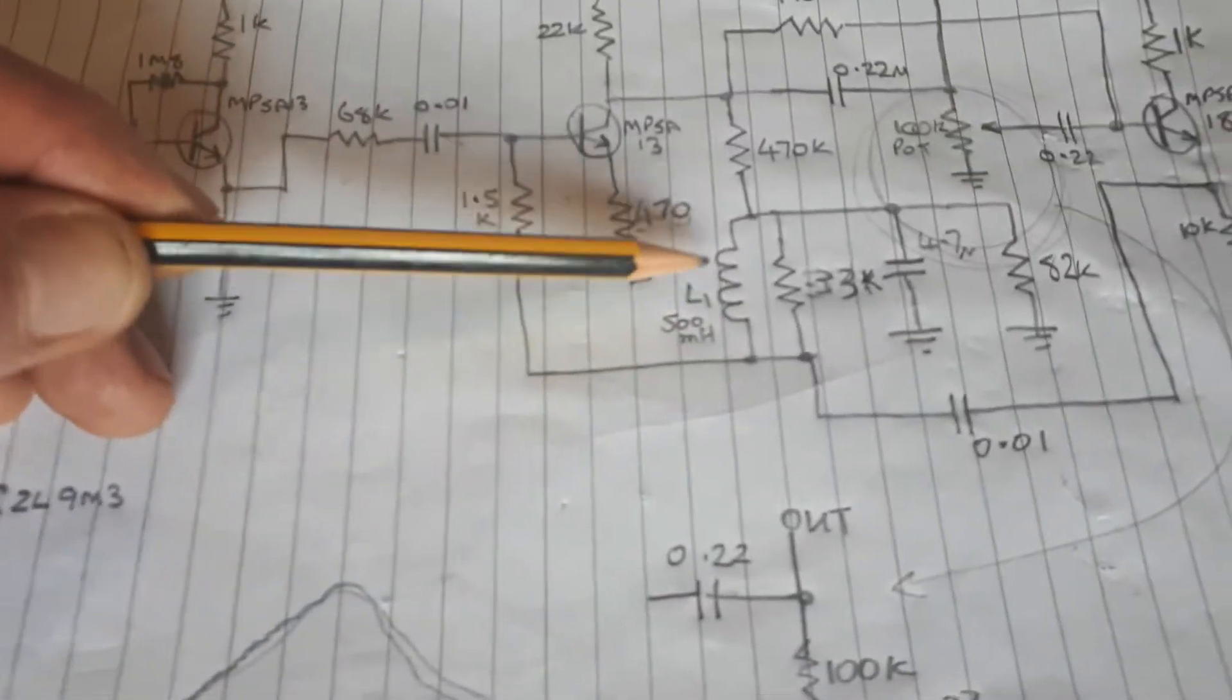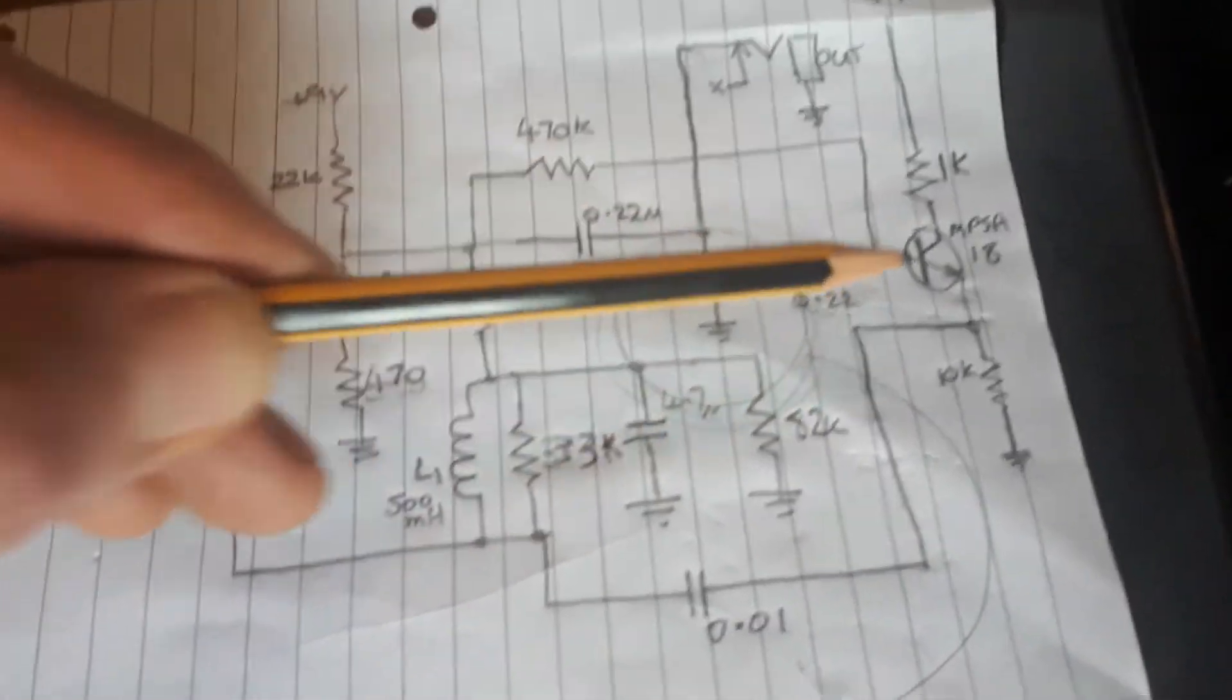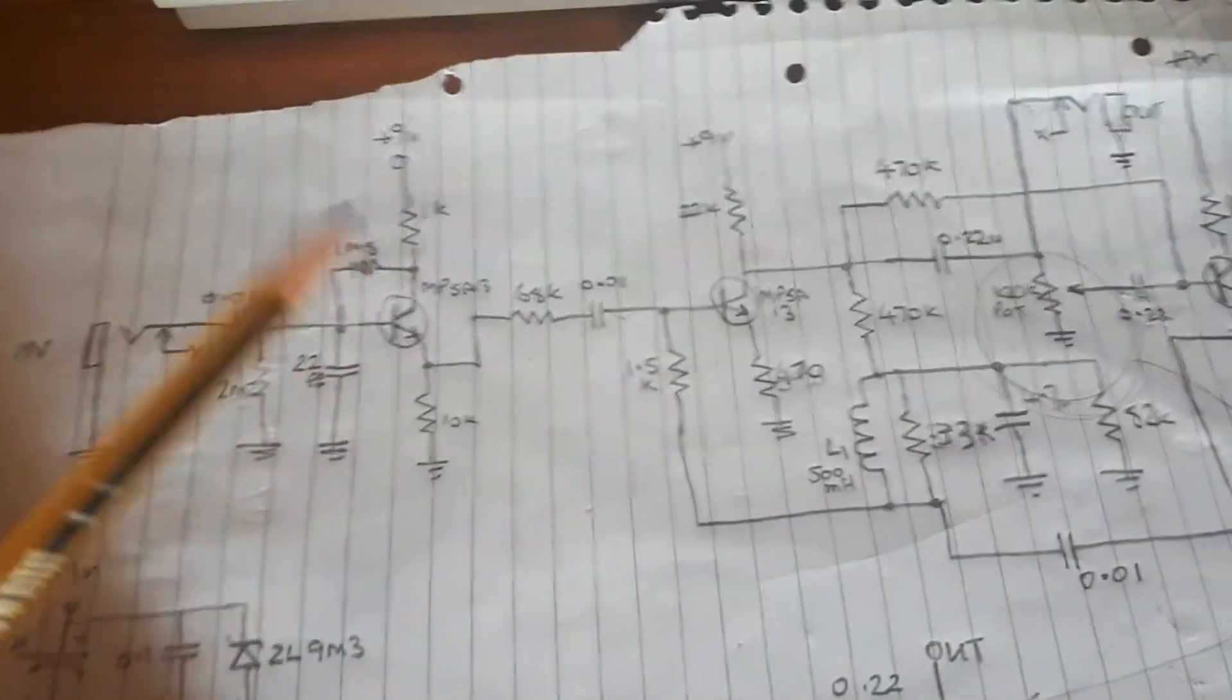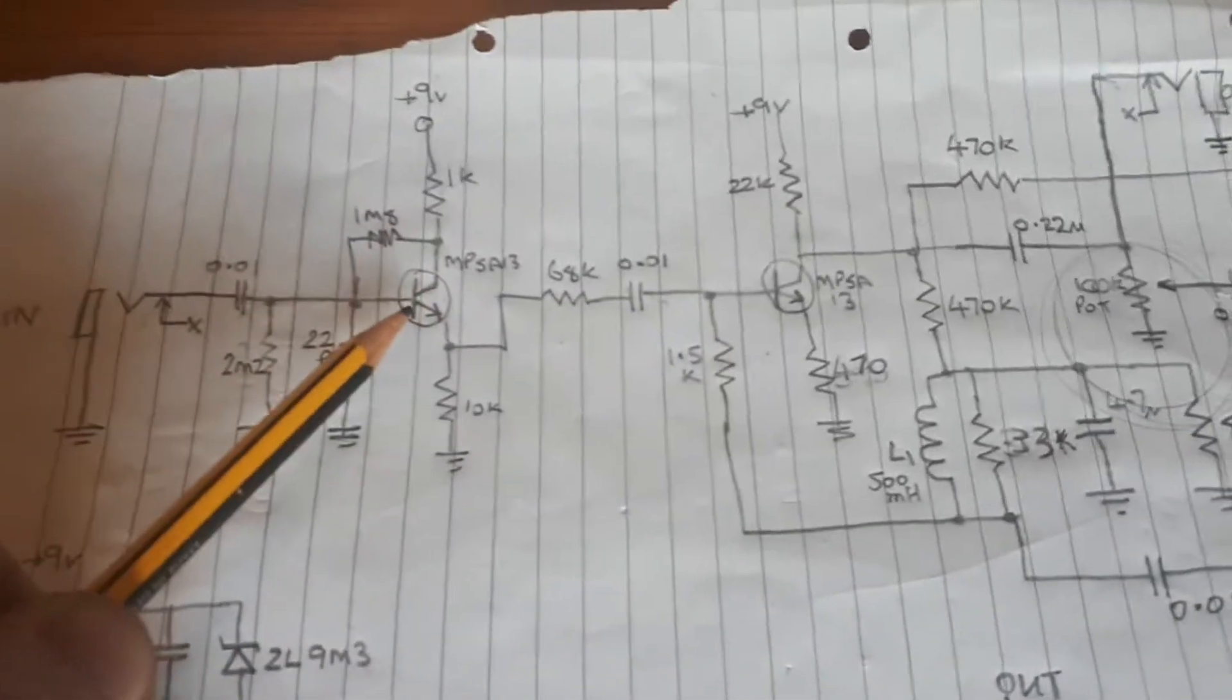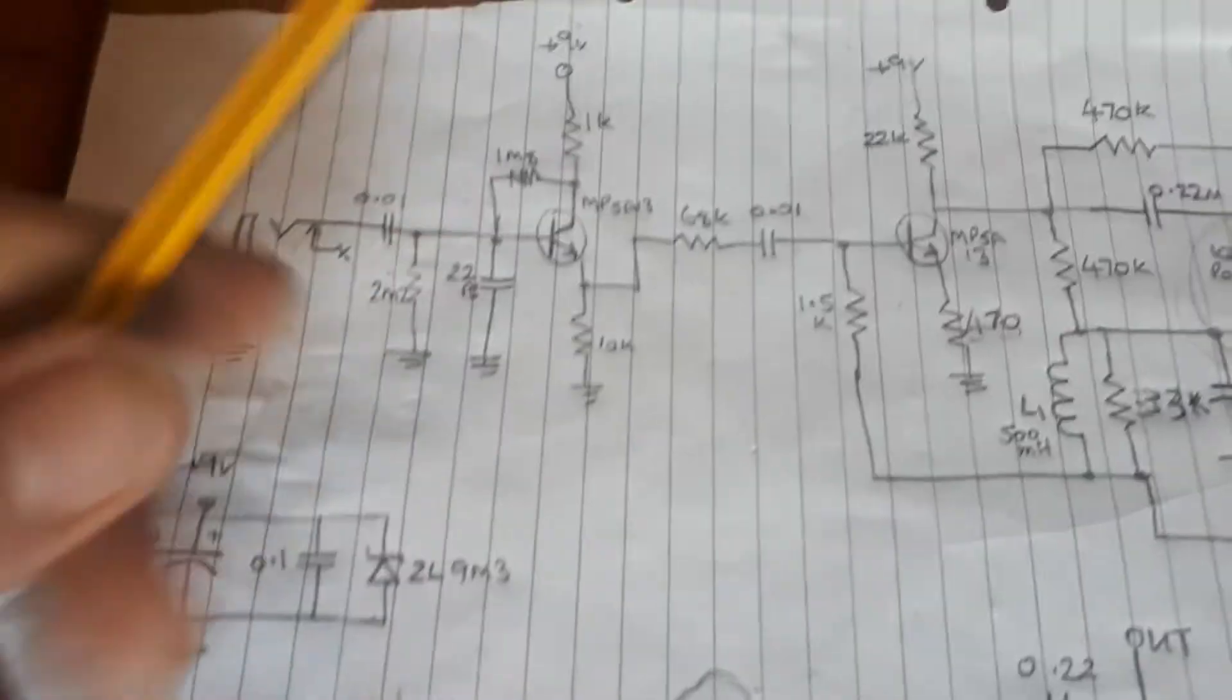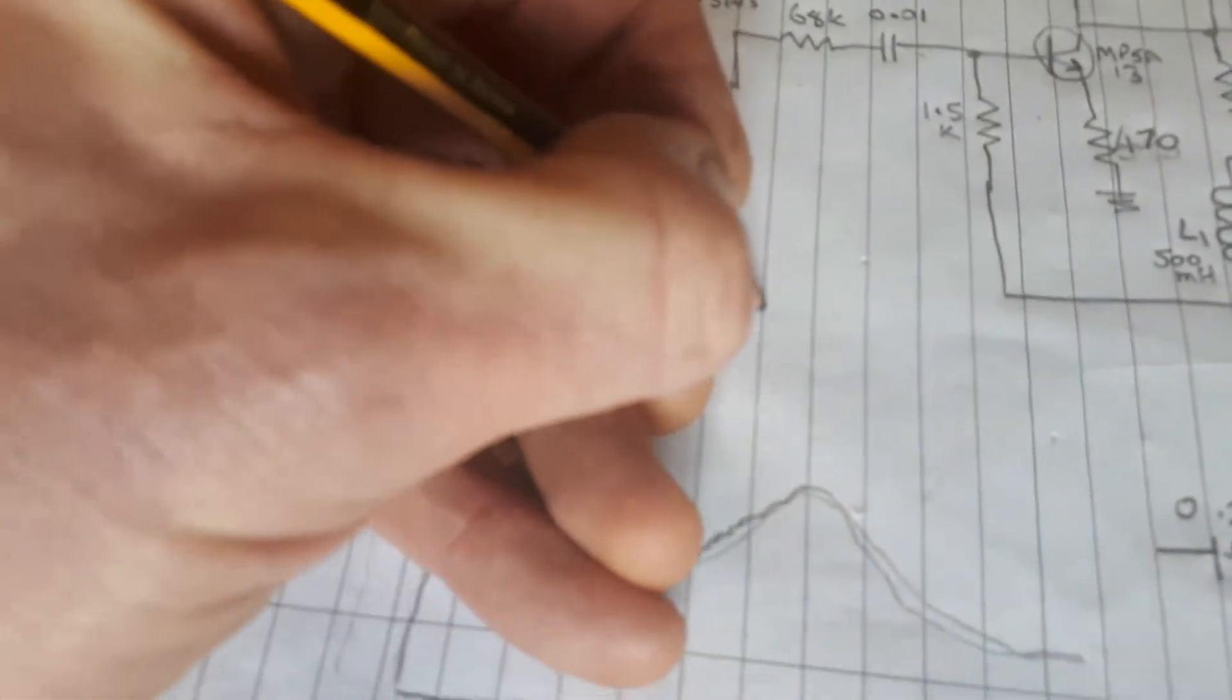Try different coils as well, different transistors. In an original Crybaby they use a Darlington transistor which is two put together. One's in a real Darlington.